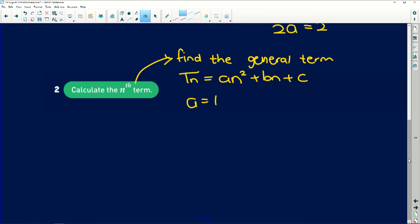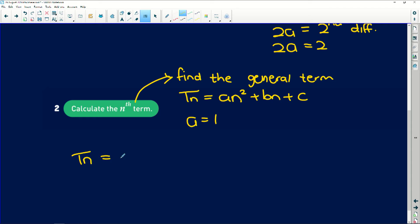So tn is the number, the value of the term at that position and n is the term position. So it's like basically x and y. So when you're trying to find different variables in your equation, remember the number of variables you have that you're trying to find is the number of simultaneous equations you need to have. So we know now that tn is equal to, a is equal to 1. So we can simply say n² + bn + c.